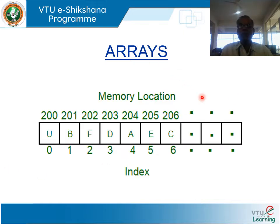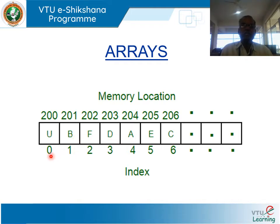Take an example. Here is an array with memory addresses 200, 201, 202, 203, and so on. It contains data elements U, B, F, D, A. Its index starts with 0, then 1, 2, 3, and so on. This is an array representation.